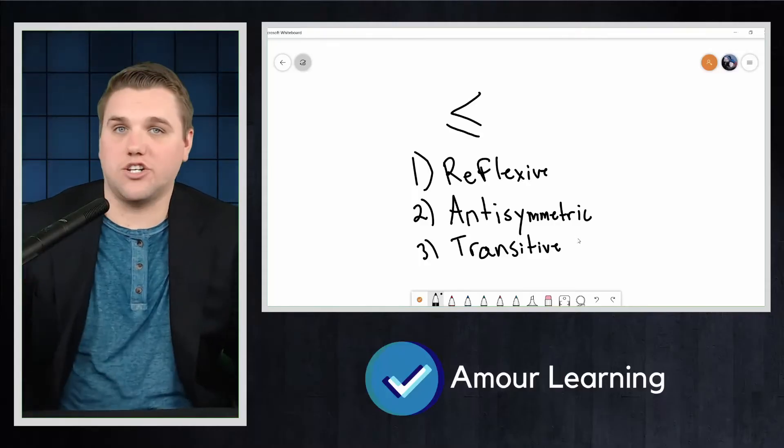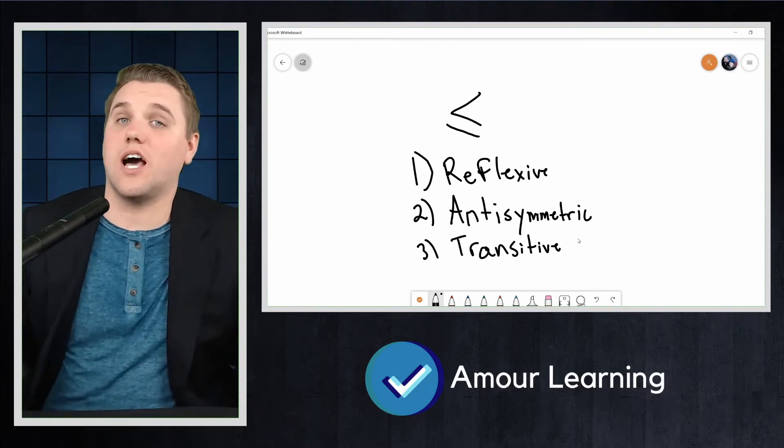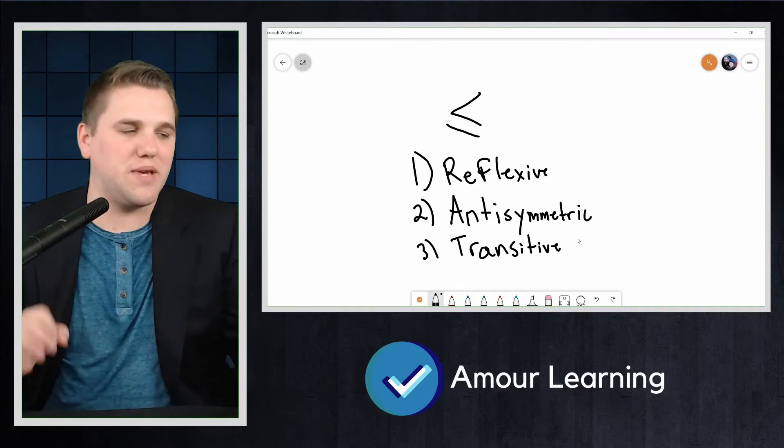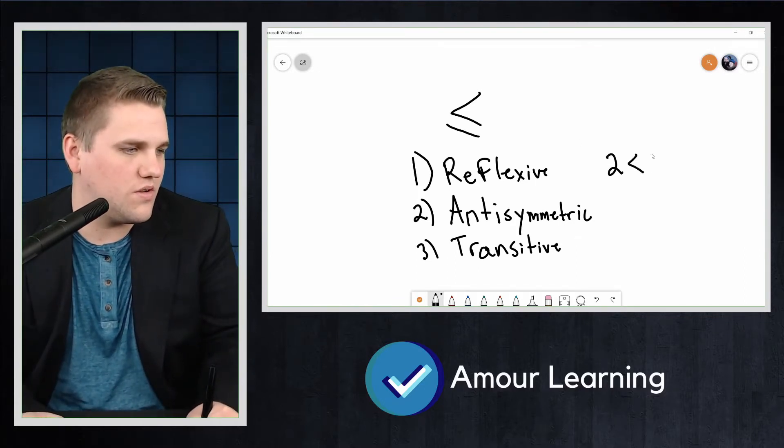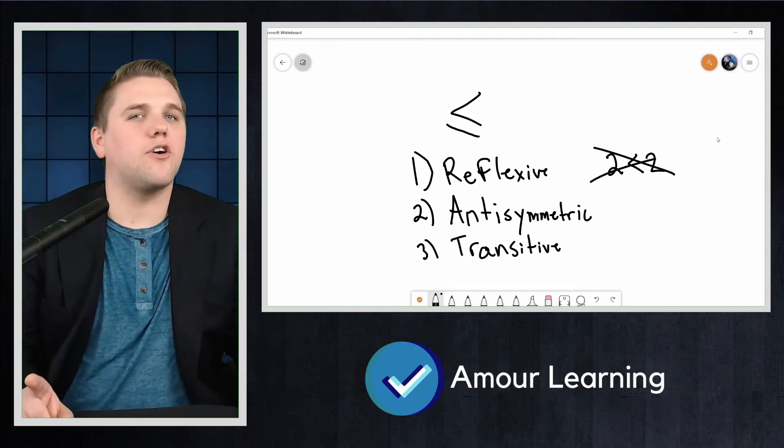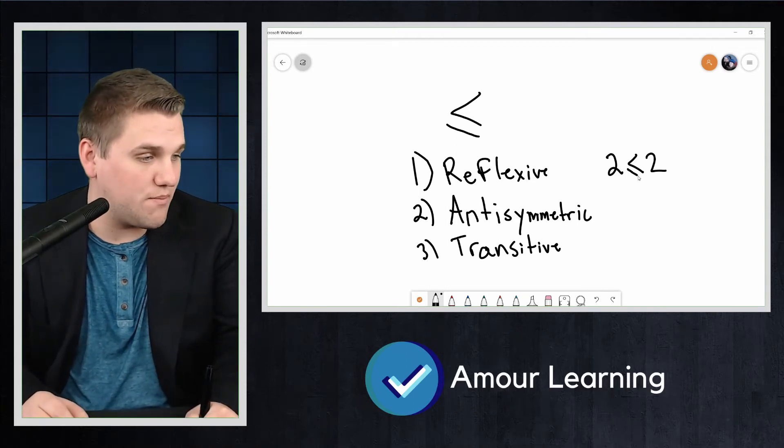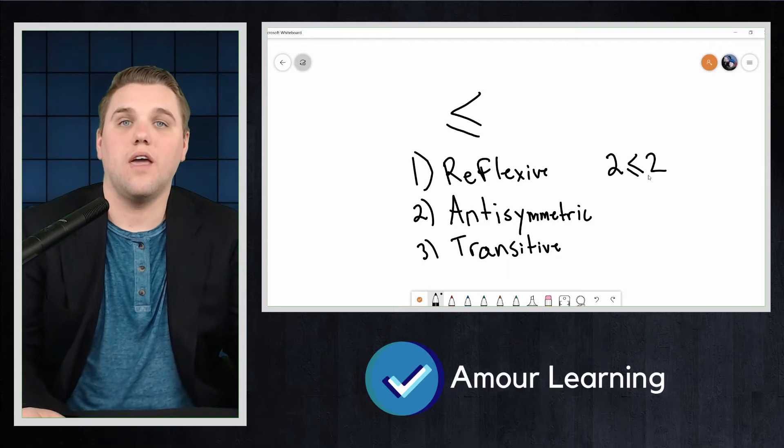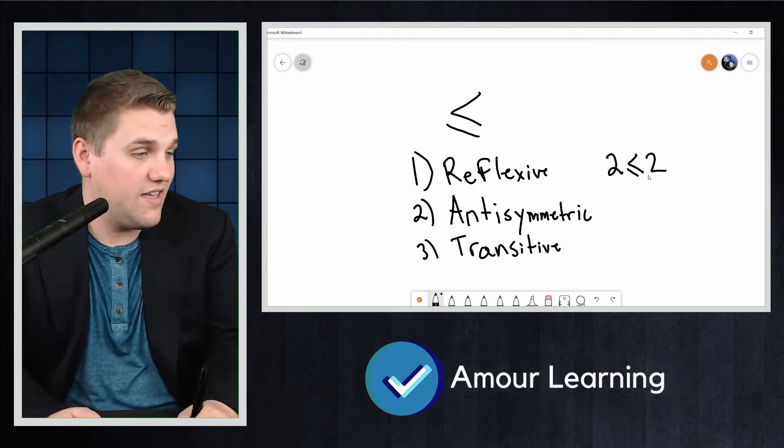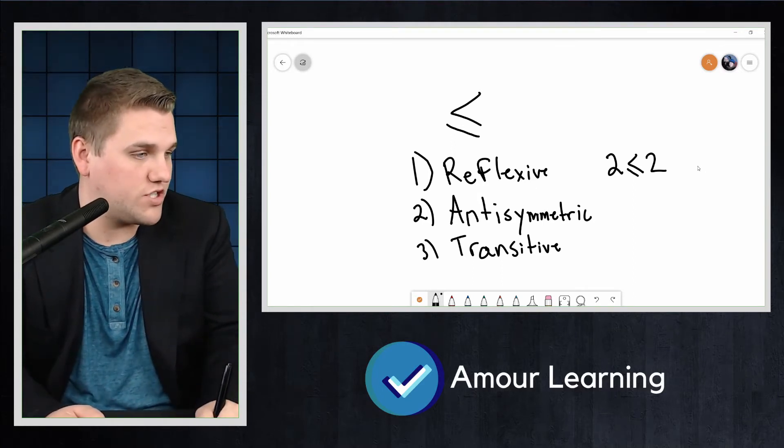So in the last lecture, we discussed reflexive and transitive, and we also discussed how the less than symbol is technically not reflexive because two is less than two is false. However, we can fix this by looking at the less than or equal to symbol. And so in fact, this is true for any A in the real numbers or integers or whichever you want to use.